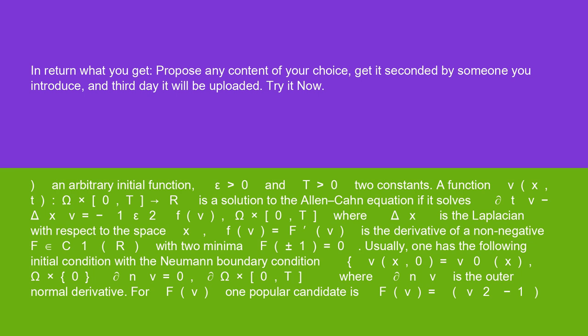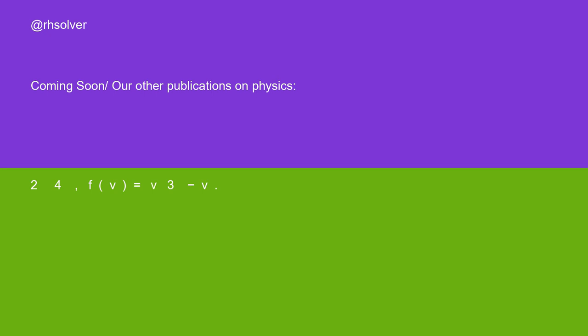where ∂ₙv is the outer normal derivative. For f(v), one popular candidate is F(v) = (v² - 1)²/4; f'(v) = v³ - v.